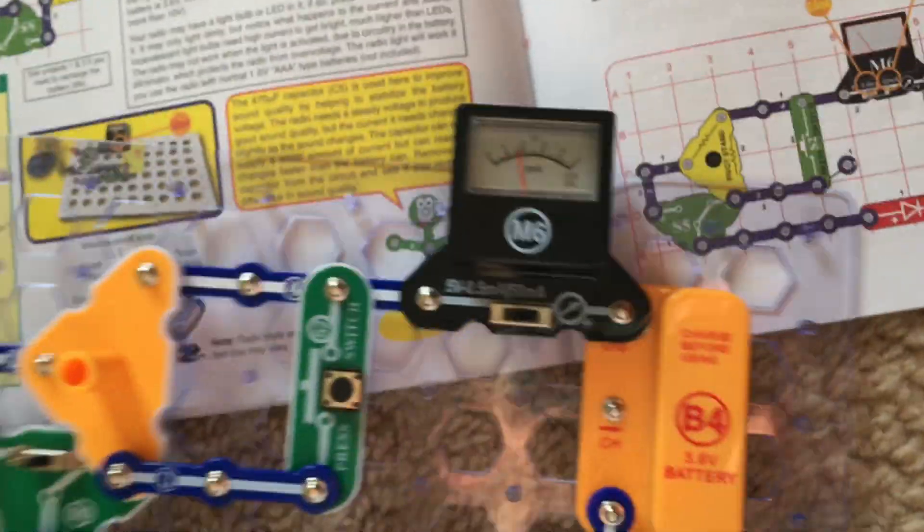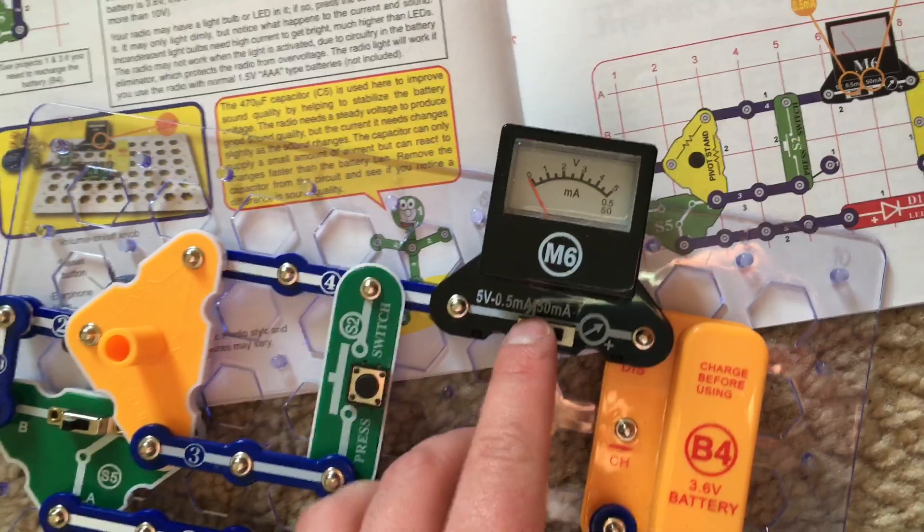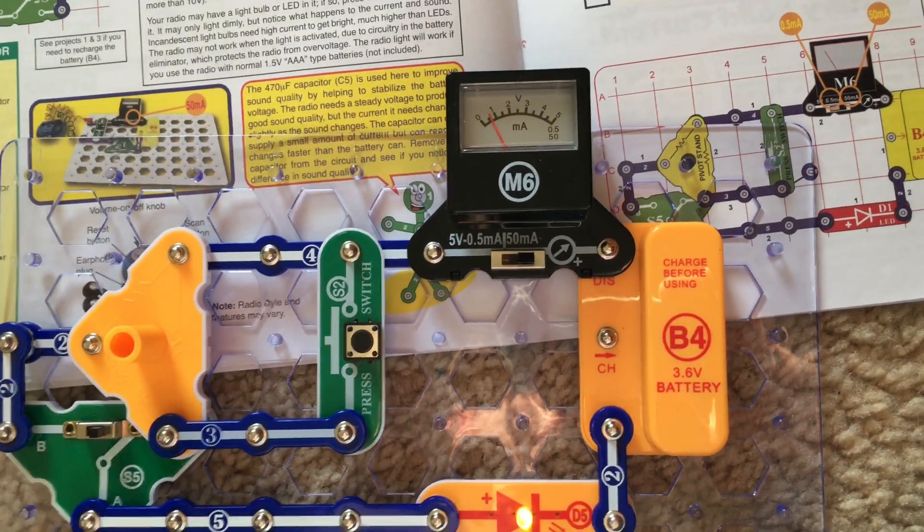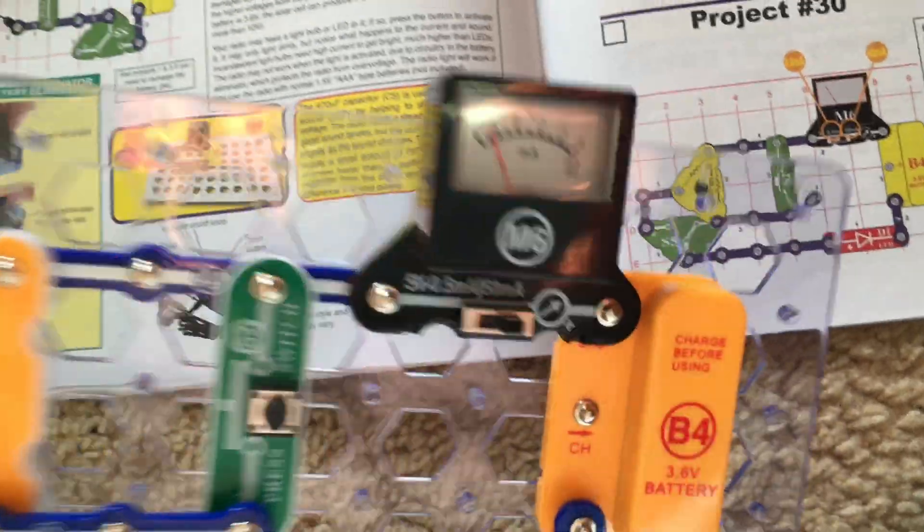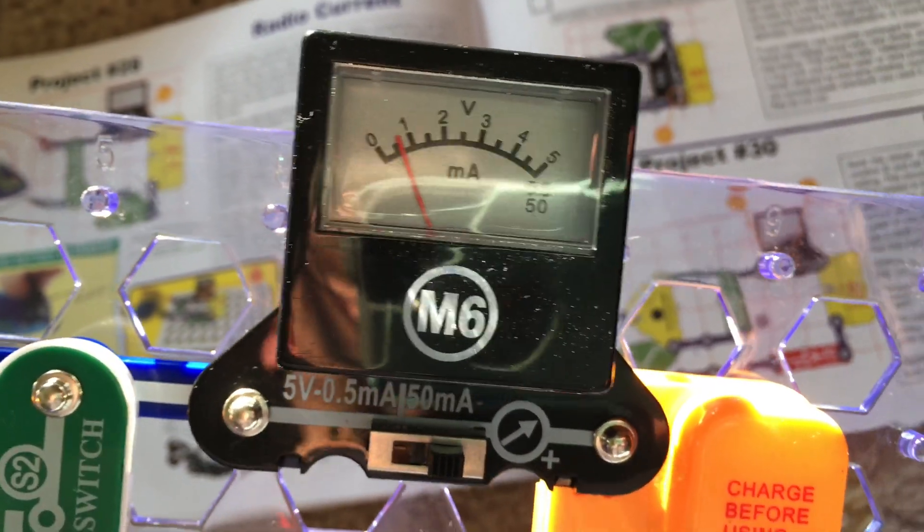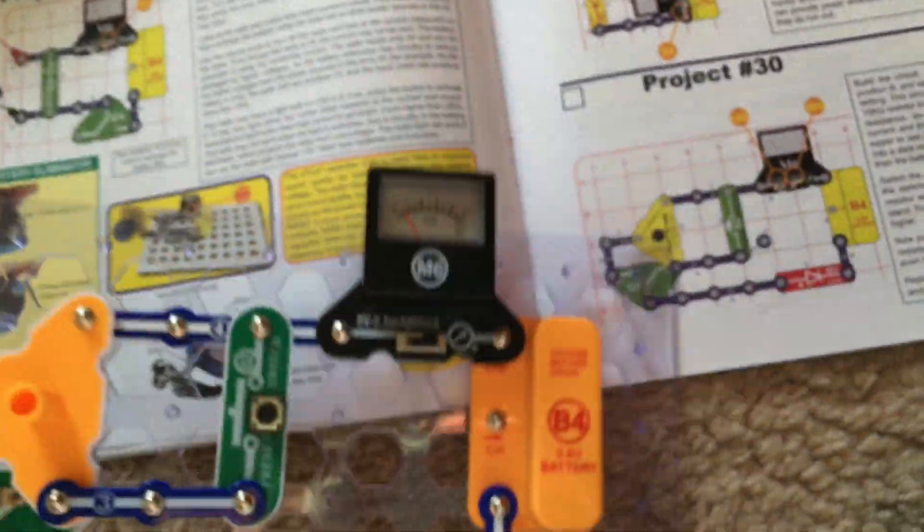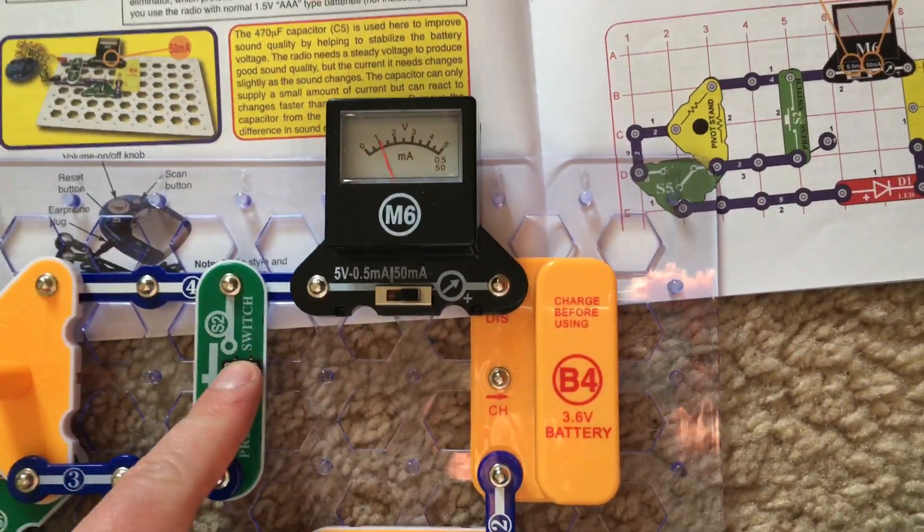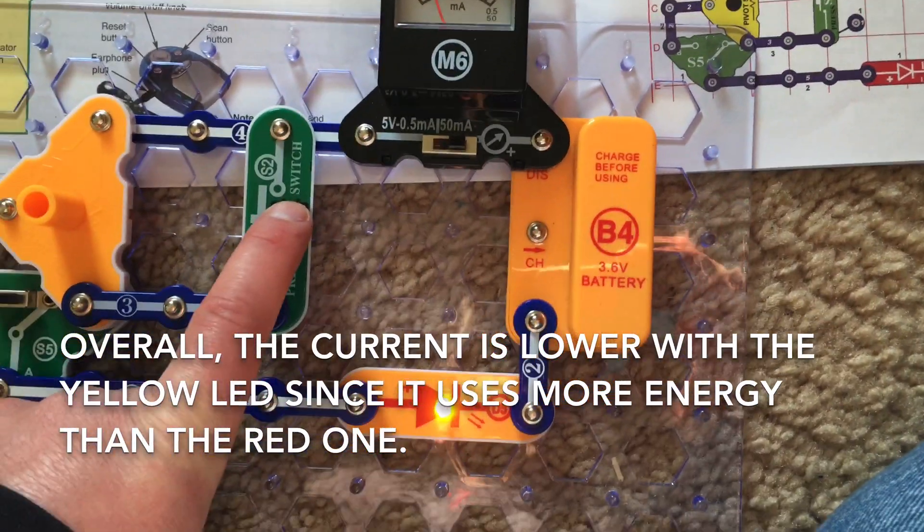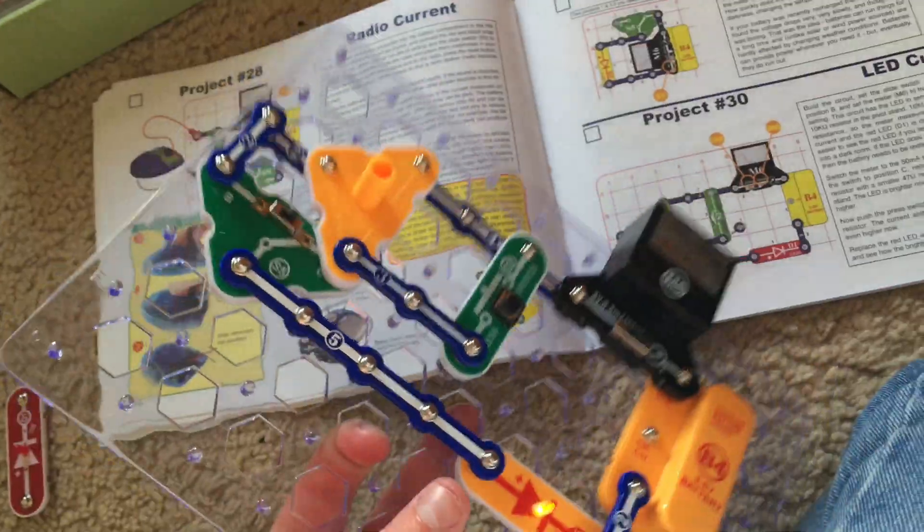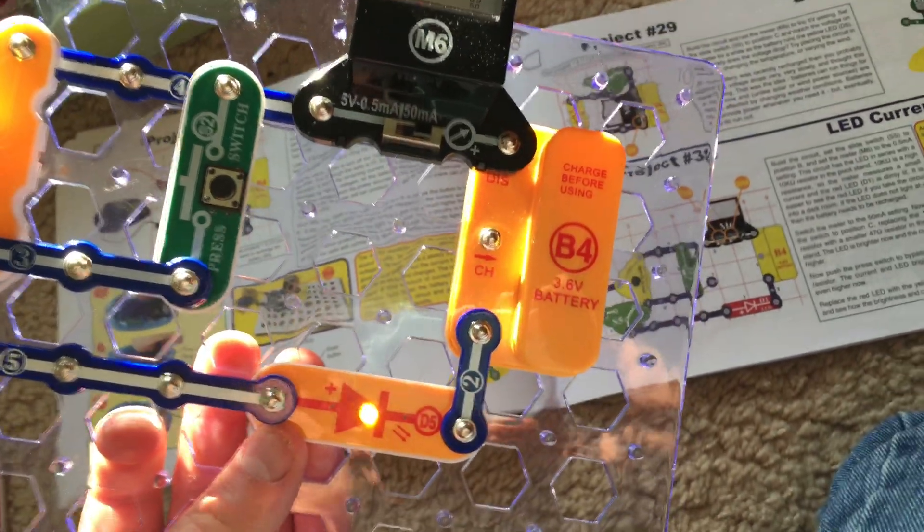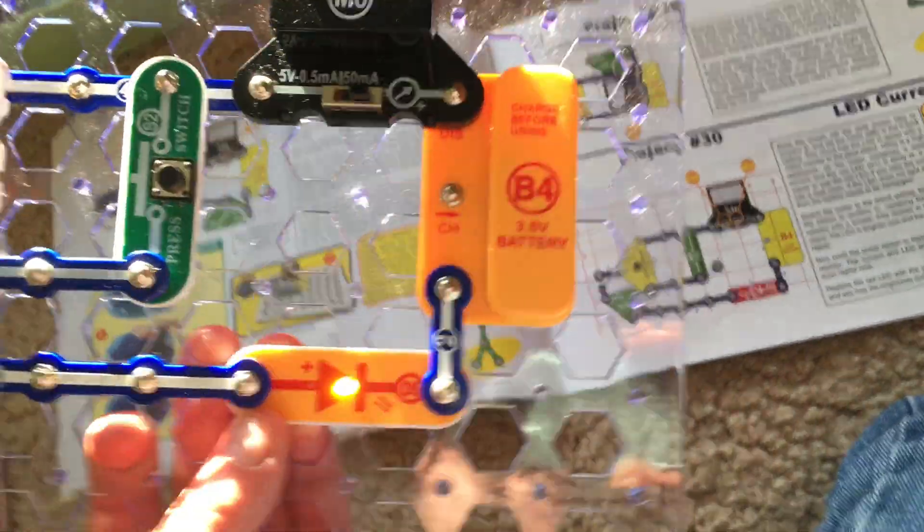If I move the voltage meter to the 50 milliamp setting and move the slide switch to the C position, more than 5 milliamps of current is being generated, and even more when I hold down the press switch and the yellow LED is much brighter. These LEDs have built-in resistors because otherwise the current would damage them.